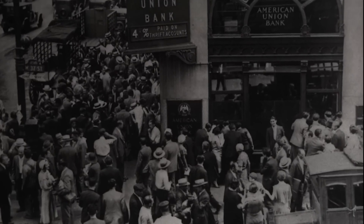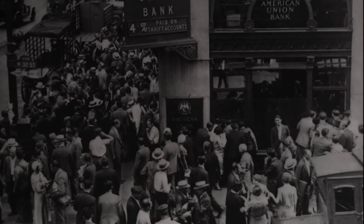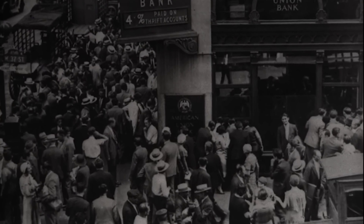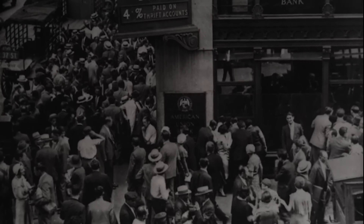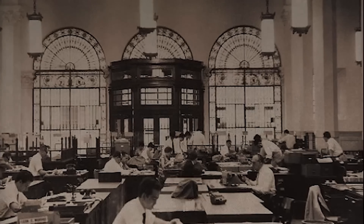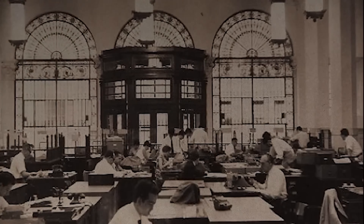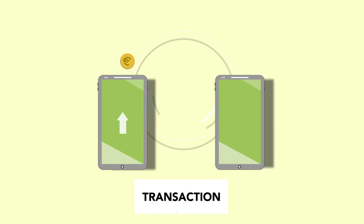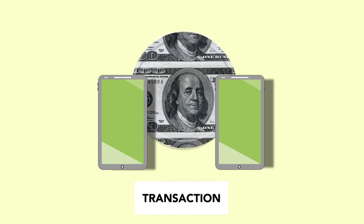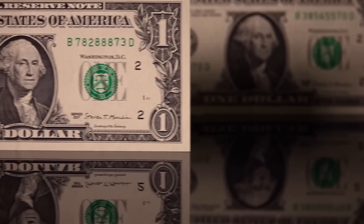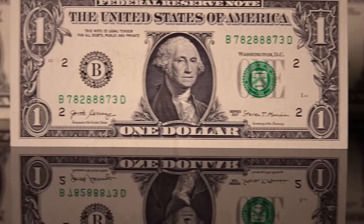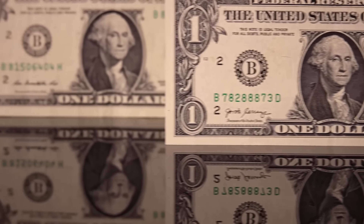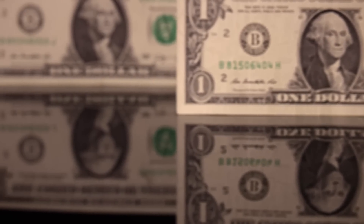In the 20th century, with the advancement of technology, electronic currency began to gain space, revolutionizing the financial market. The first form of electronic currency appeared in the 1960s when banks began using electronic systems to transfer funds between accounts. Nowadays, financial transactions can be done quickly and safely thanks to new technologies. Over time, one currency gained so much strength that it became the main international reserve currency and is widely accepted worldwide as a means of payment.